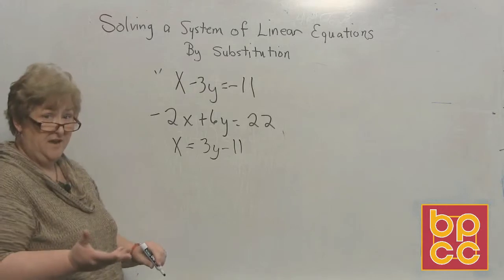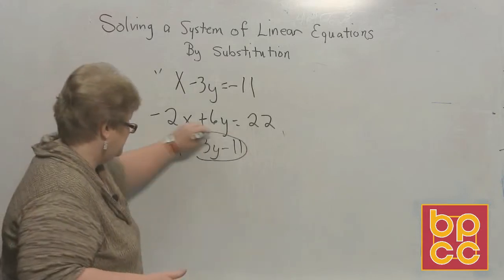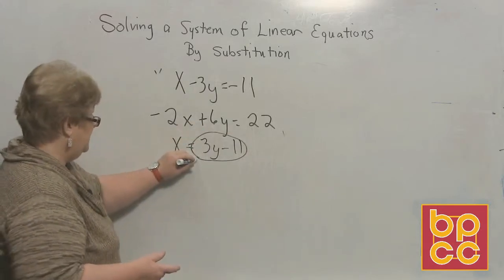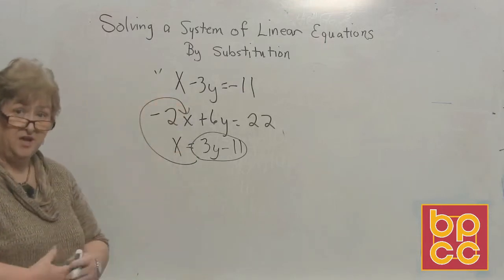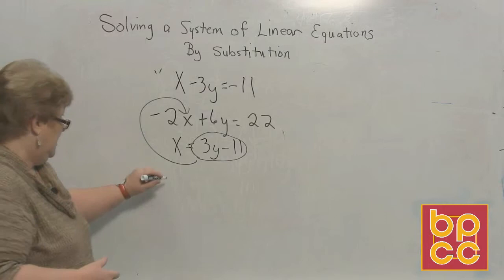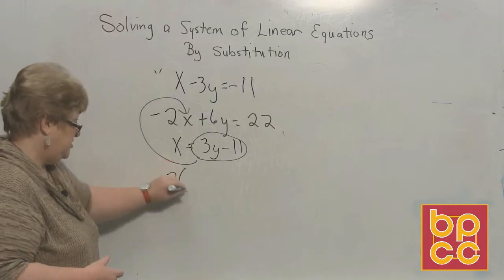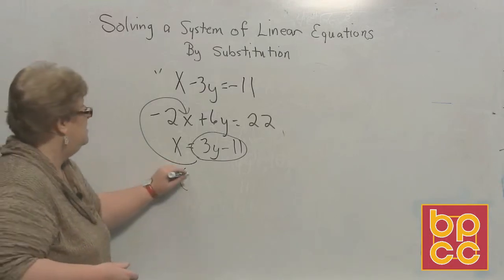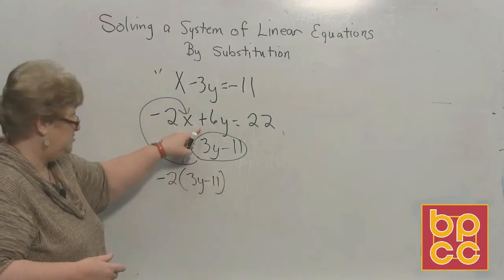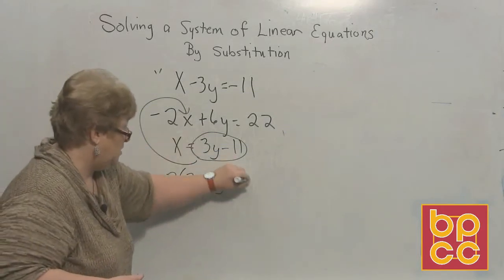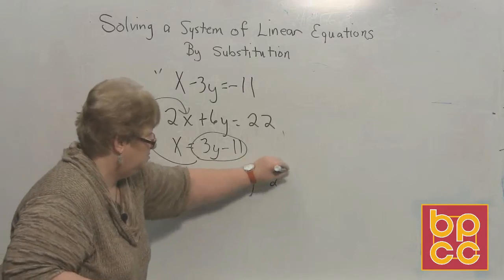Now this is x's new name. So I'm going to circle this and I'm going to aim it right where that x is. And I'm going to sub in x's new name. I now have a negative 2, here comes his new name, 3y minus 11, keep going on your equation, plus 6y equal 22.